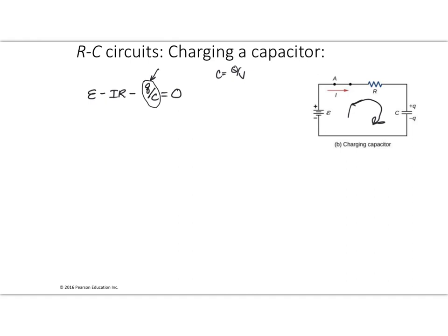This ends up giving us a differential equation. It's not obvious at first, but if we use the definition of what current is — it's the derivative of charge with respect to time — we start to see that this could be a differential equation. You might say you don't know how to solve a differential equation, but that's okay. You actually do know how to do this one — we're just going to integrate the expression, and it ends up not being that bad.